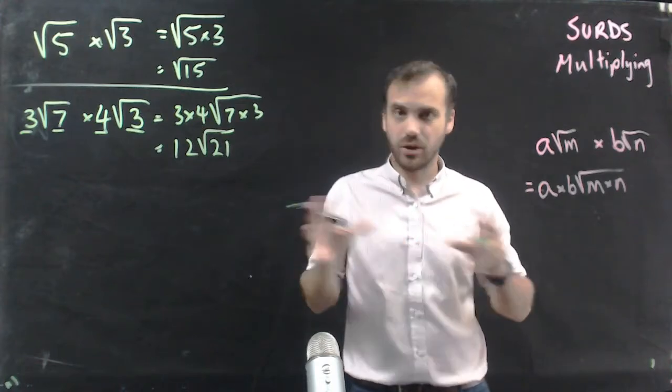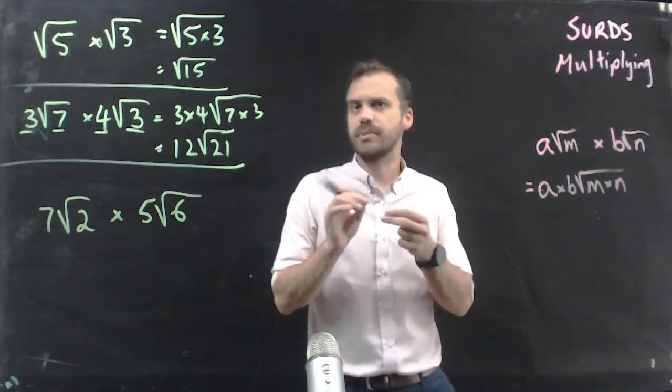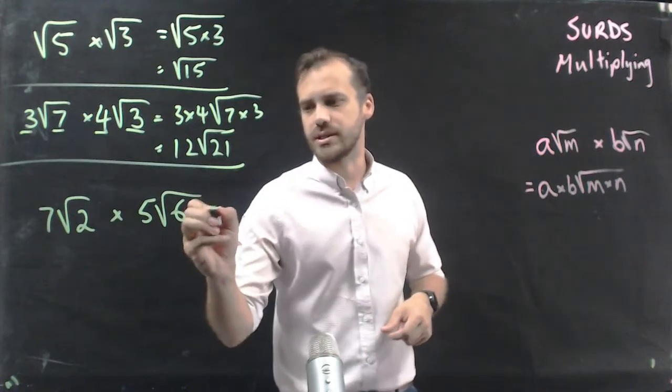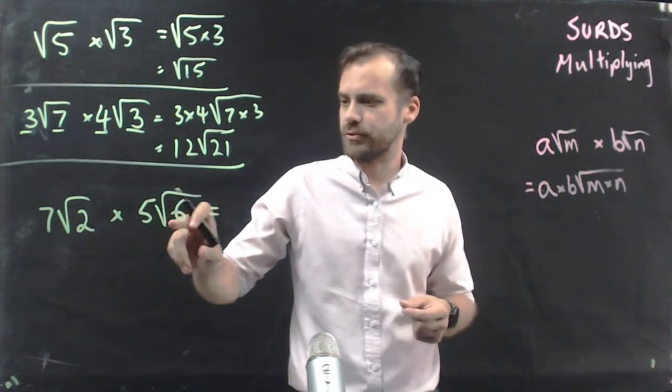There isn't really a whole lot to this. I'm going to look at this one and just make sure that we've got this sorted, because there's an extra step here. 7 root 2 times 5 root 6.